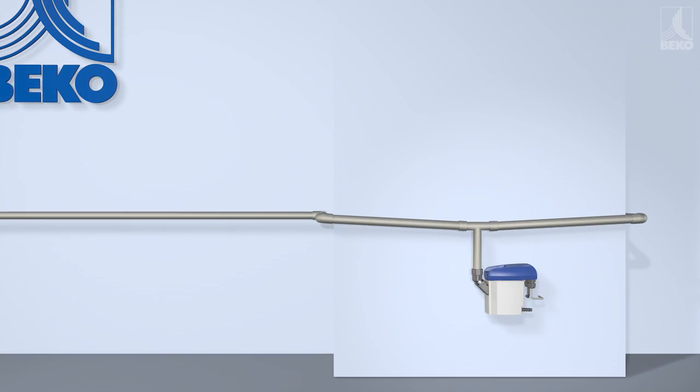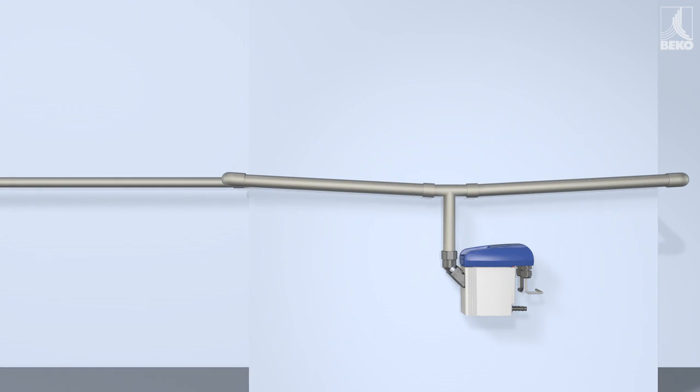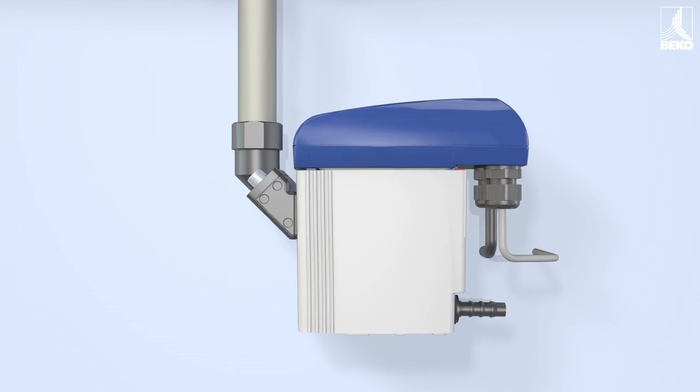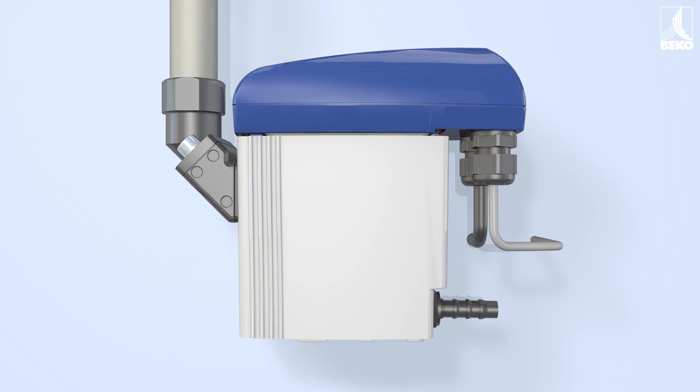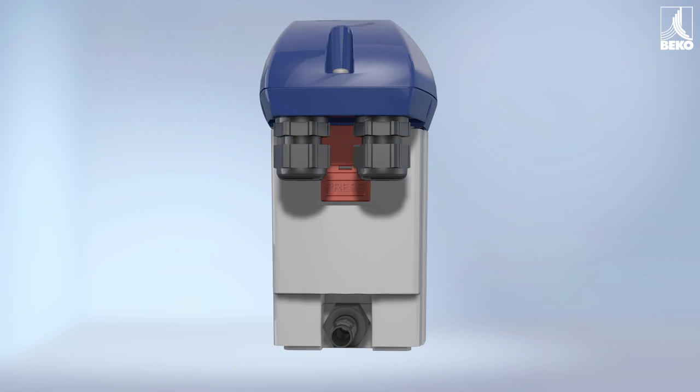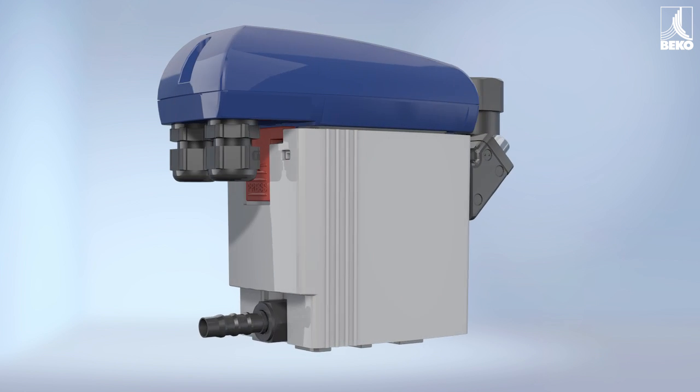How can condensate drainage prevent damage to your compressed air system and adapt to the amount of condensate without loss of compressed air? These are the strengths of the Baecomat Vario. But exactly how does it work?